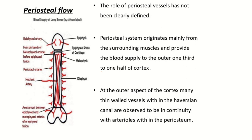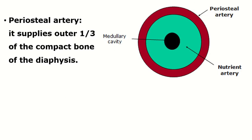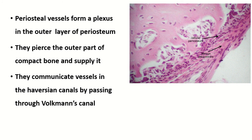The role of the periosteal vessel has not been clearly defined. The periosteal system originates mainly from the surrounding muscle and provides blood supply to the outer one-third of the complete bone of the diaphysis. The periosteum is absent at the articular surfaces but present on the rest of the bone. The periosteum has two layers: the outer fibrovascular layer, where the periosteal arteries are present, and the inner cellular or osteogenic layer.